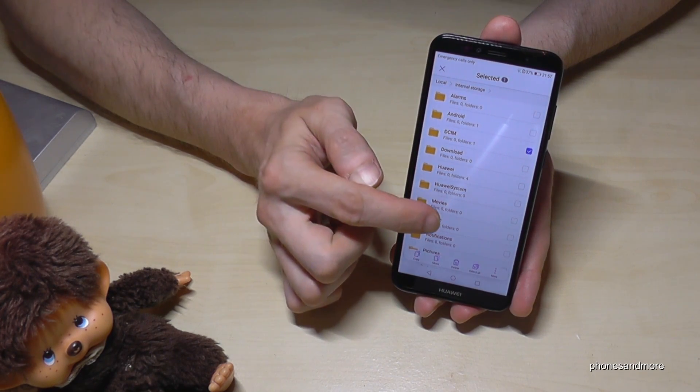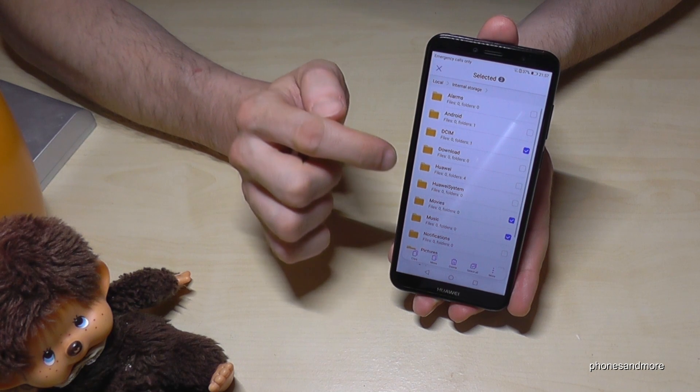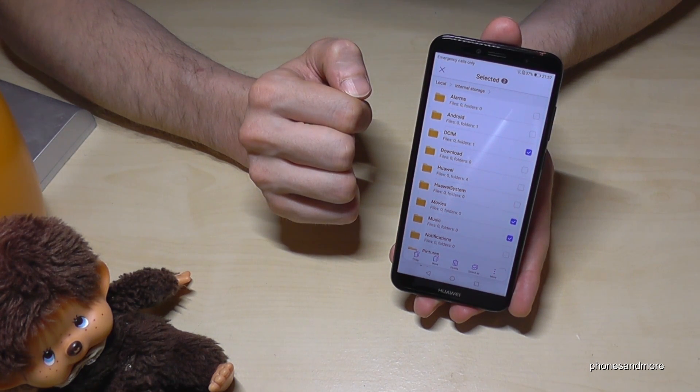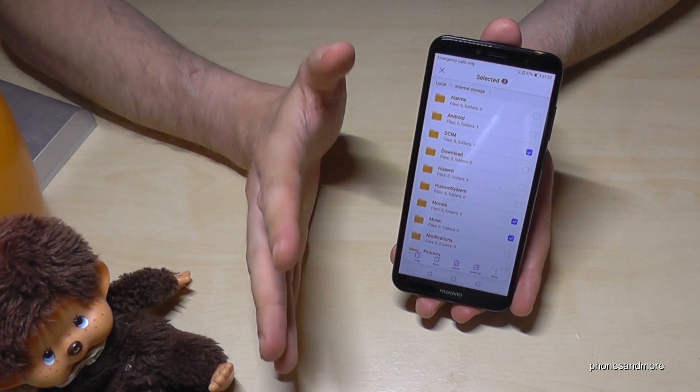Now you just hold it, select them. And now you can select also the music or the movies. But take care. Don't select the Huawei system or some other system files. Because it could really disturb your phone. So take good care.